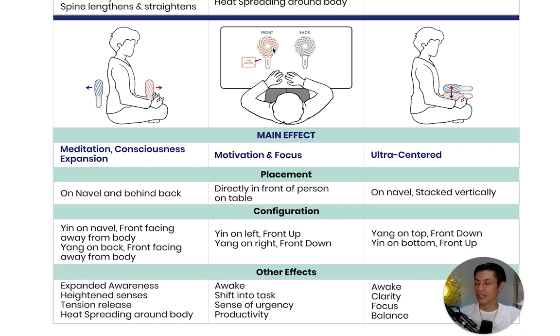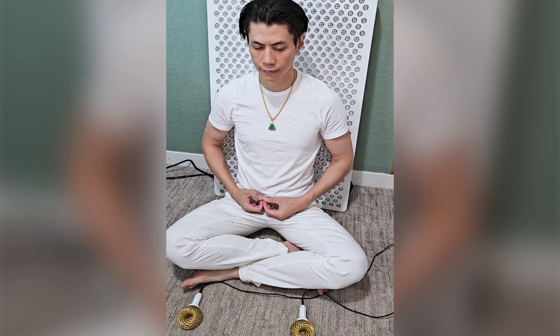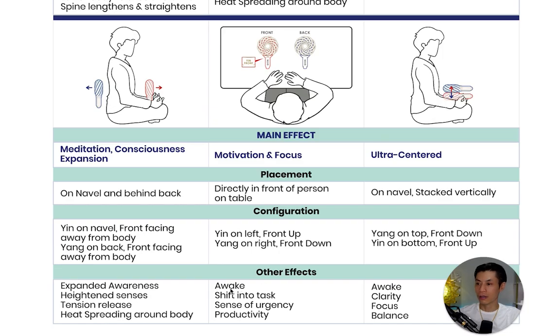Here's another easy configuration — great for school, learning, your kids, or work because it provides motivation and focus. Have the yin coil front facing up to your left in front of you, and the yang coil facing downwards slightly to the right of you. You can place this on the desk in front of you or on the floor if you're sitting on the floor. Other effects include feeling awake, shifting into task, and a sense of urgency and productivity. This is what I do when I'm working on my computer — I place it in that configuration on the desk and get energy, focus, and motivation throughout the day.